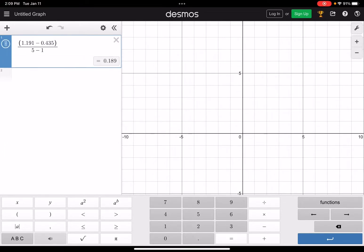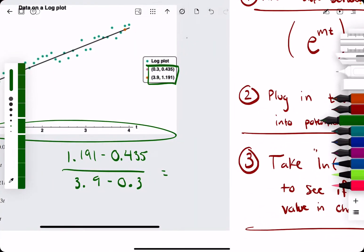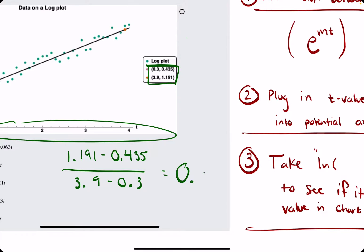And on the bottom, we have 3.9 minus 0.3. And that gives us 0.21, that's a positive 0.21.